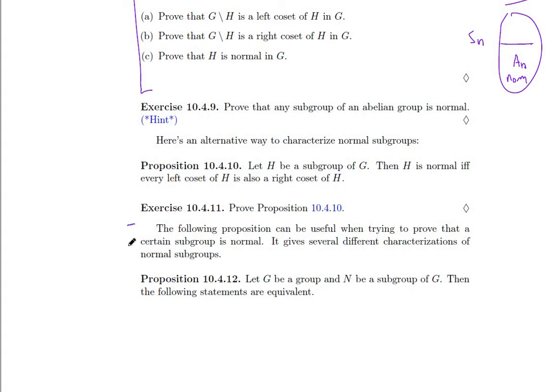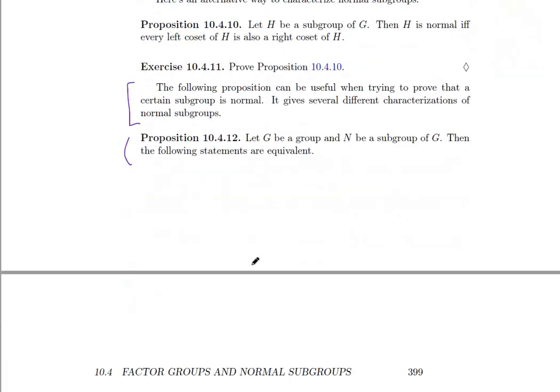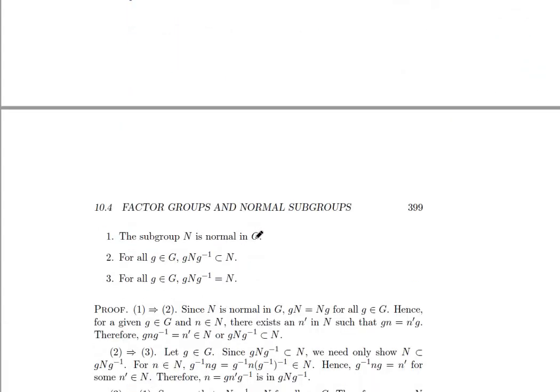Alright, so here we have a proposition that says, if we want to prove a certain subgroup is normal, we're going to have a few equivalent conditions. So let's see. N is normal if and only if GNG inverse is contained in N, or GNG inverse is equal to N. These two are equivalent means that as soon as you prove GNG inverse is contained in N, automatically you have GNG inverse equals N.